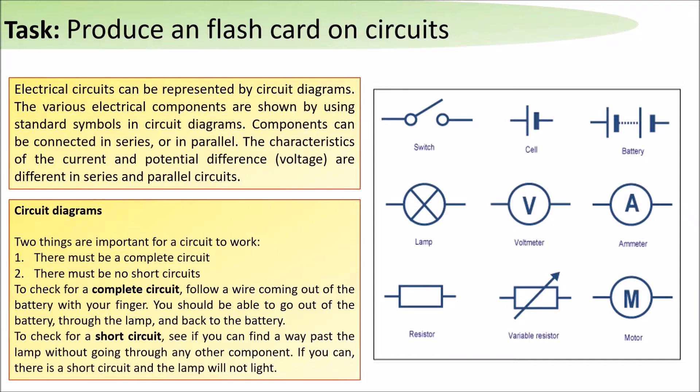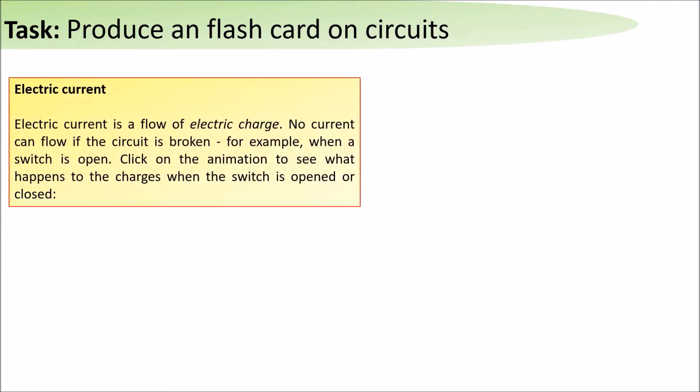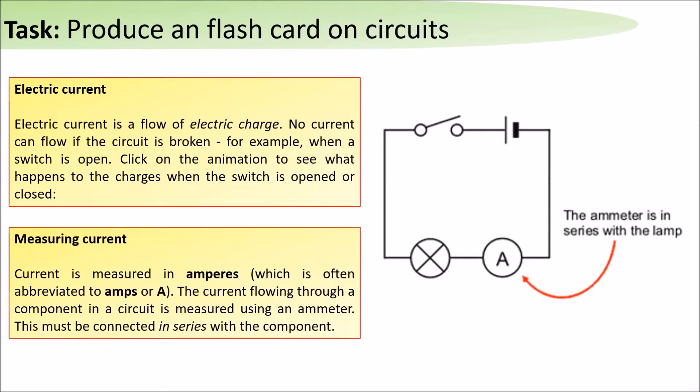Electric current is the flow of electric charge. No current can flow if the circuit is broken, for example when the switch is open. This diagram shows when the switch is open, so therefore the lamp would not be turned on.